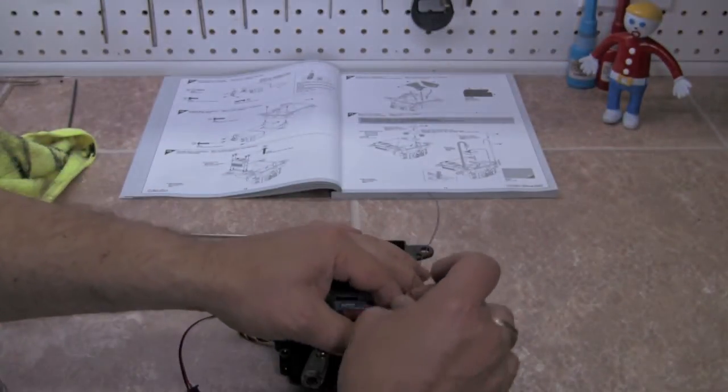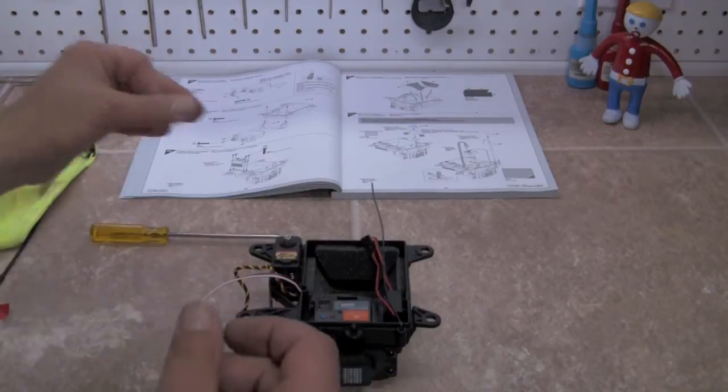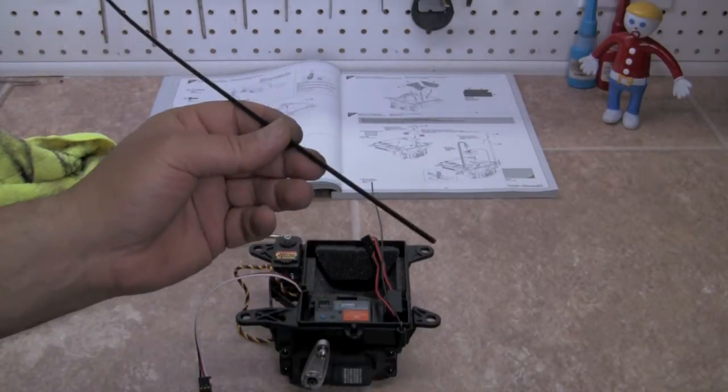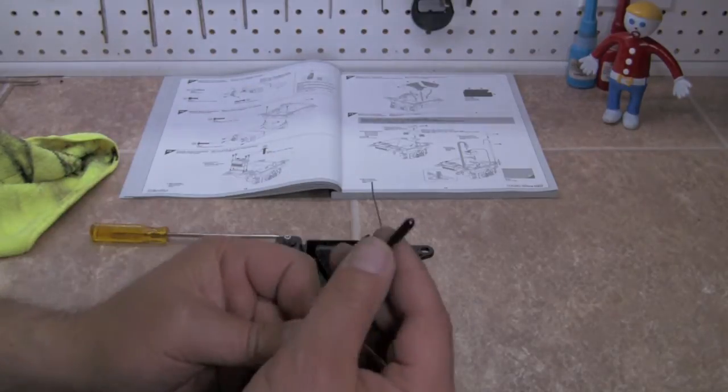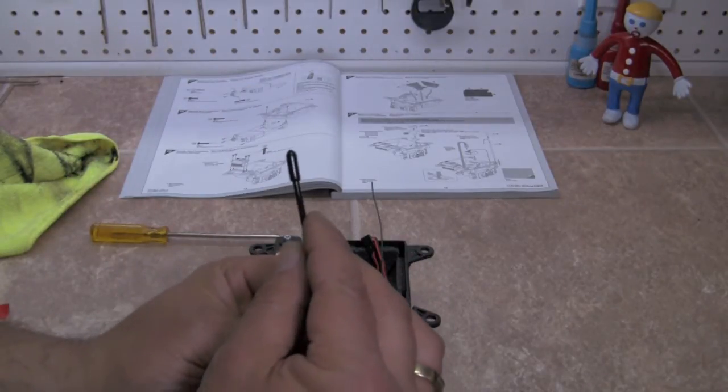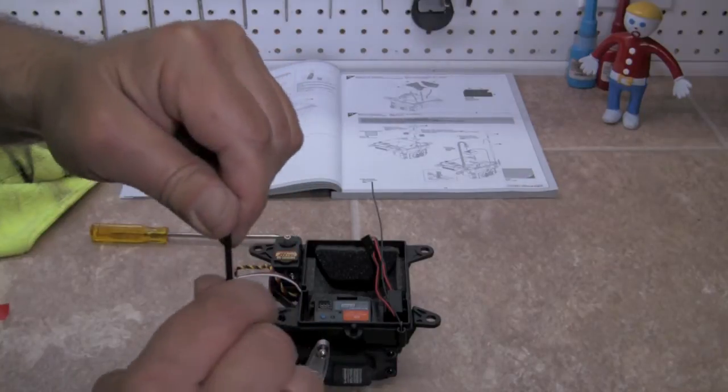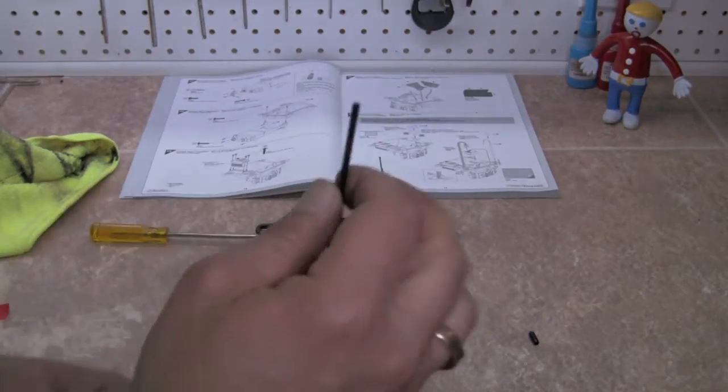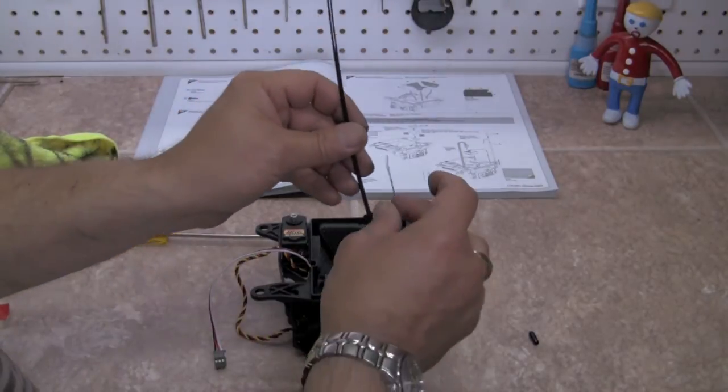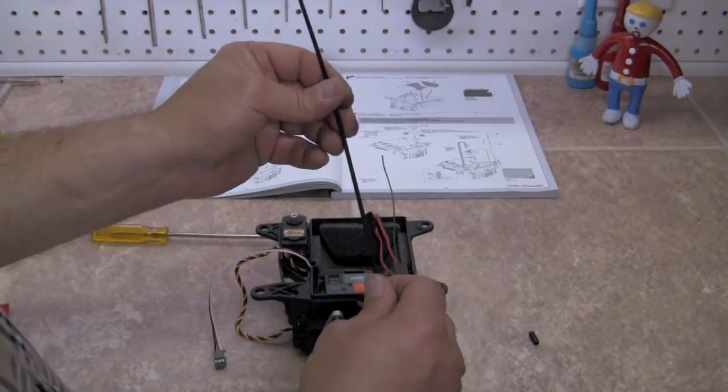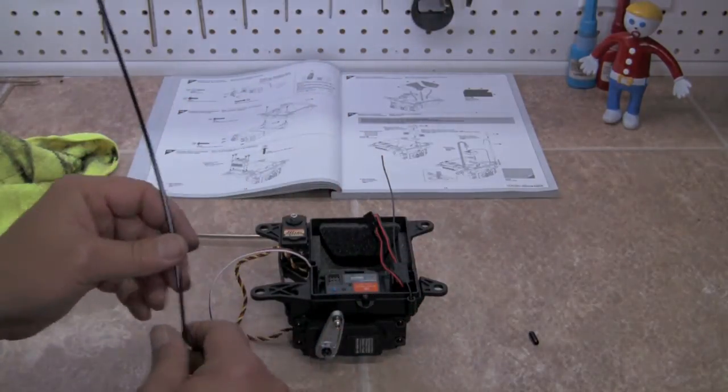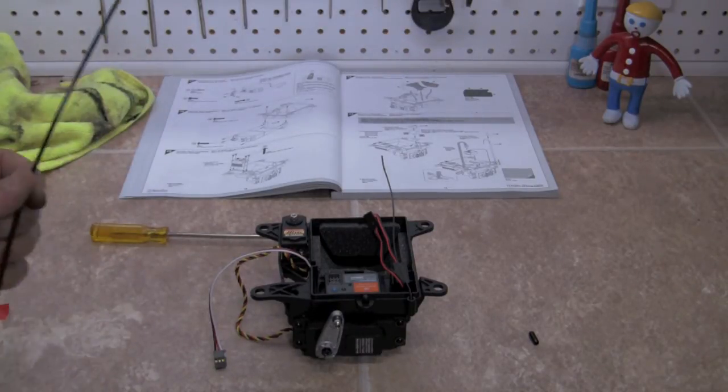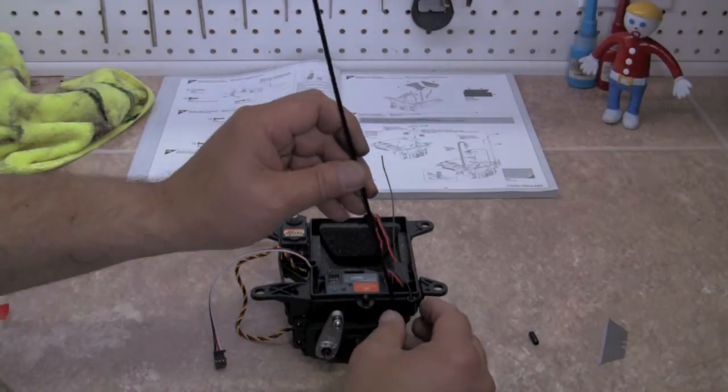Next thing we're going to do is install our antenna tube. There's many different lengths of antennas and they give us a really nice long tube here. Some antennas you can use an end cap on, some you cannot, and you're going to refer to your radio's instructions on whether you should or not. Some antennas you want to hang out of the tube and some you don't.